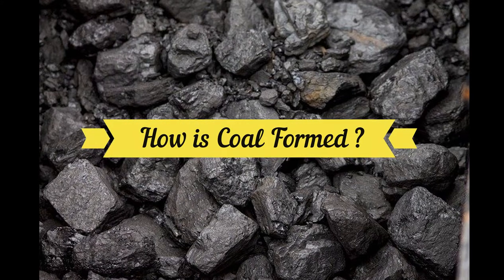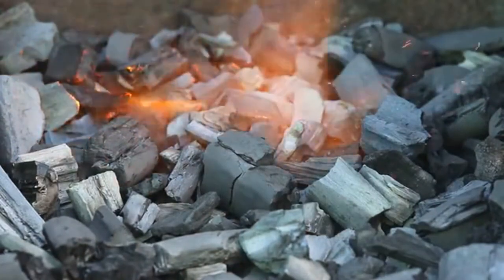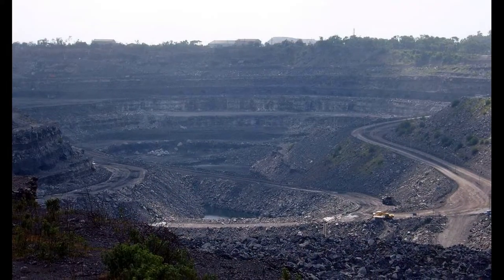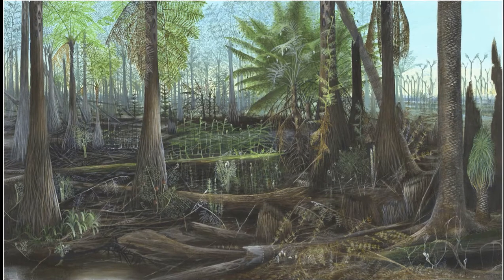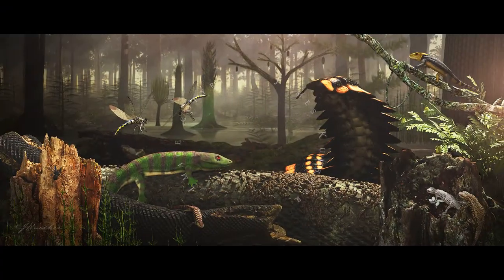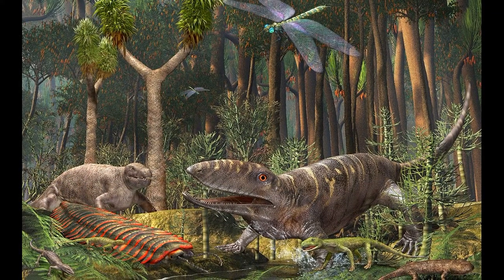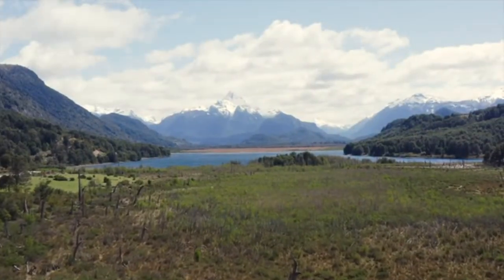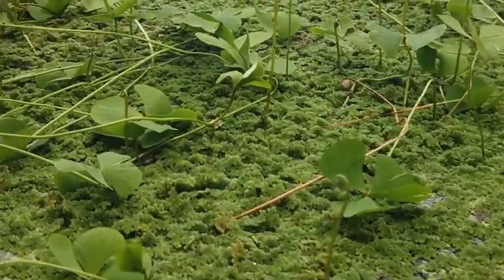How is coal formed? Coal is a solid, black, readily combustible fossil fuel that contains a large amount of carbon-based material. The formation of coal takes a few million years. The first coal-bearing rock units appeared around 290 to 360 million years ago during the Carboniferous, or coal-bearing, period. The formation of coal begins in areas of swampy wetlands where groundwater is near or slightly above the topsoil.